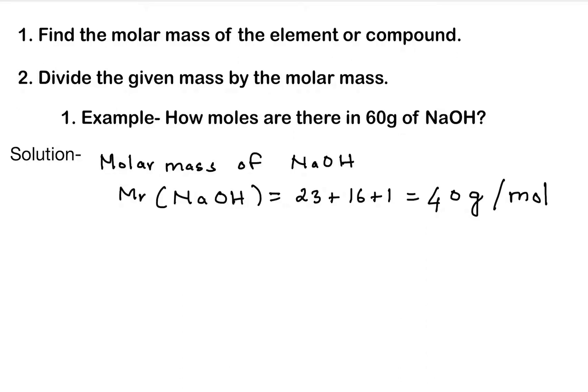Now the next step is divide the given mass by the molar mass. What is the given mass? 60 gram. So 60 gram divided by 40 gram per mole will be equal to 1.5 moles of sodium hydroxide NaOH. So this is our final answer. Let's do another example.